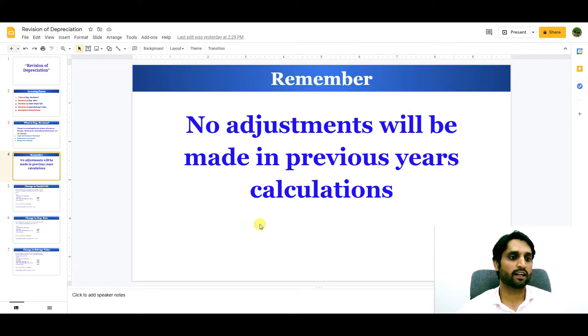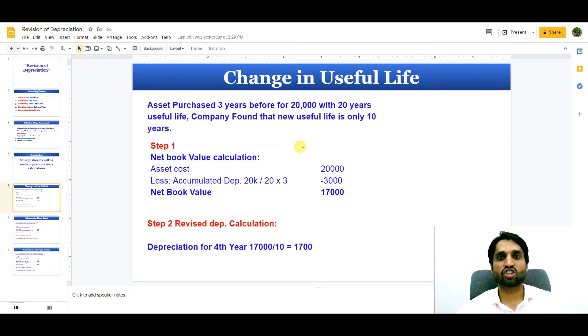Now let's move ahead and see if the change will happen in useful life. For example, we purchased an asset three years before for 20,000 with 20 years useful life. Company found that new useful life is only 10 years. While using the asset was used too much in production, so the useful life decreased.